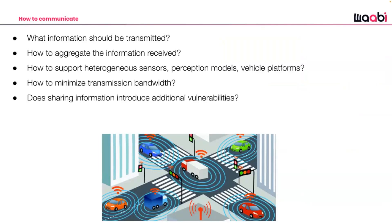There are still many open questions in this field. What information should be transmitted — raw sensor data like images, point clouds, and radar, or autonomy outputs like perception and prediction? Given received messages, how do you fuse them for a motion planning system? How do you support different sensor modalities, and how do you adapt data between different types of perception models used by different vehicles or infrastructure nodes?